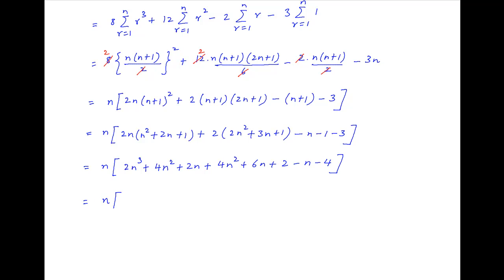Which is equal to n times (2n³ + 8n² + 7n − 2). And this is the required answer.